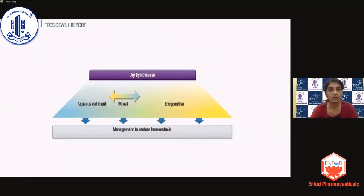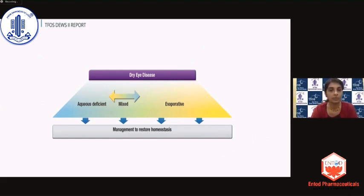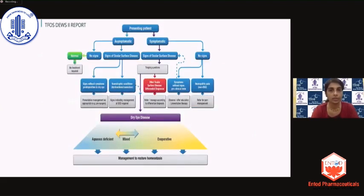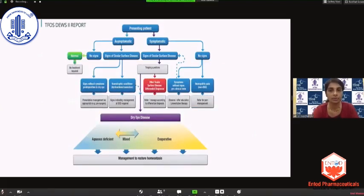The division of dry eye disease into aqueous deficient and evaporative dry eye is made very clear — theoretically, visually and pictorially — that these are not watertight compartments. You can have patients who belong to either of these categories, and you can very well have what is called hybrid dry eye disease. Once we have understood this, let's look at the upper portion of the chart and break it down further.